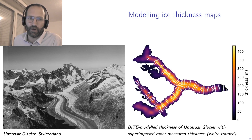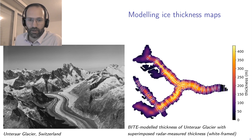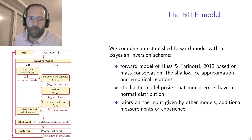But most glaciers in the world in fact have very few, or in fact zero, measurements of ice thickness. The background color is the result from running the BITE model — what the BITE model estimates the ice thickness to be.